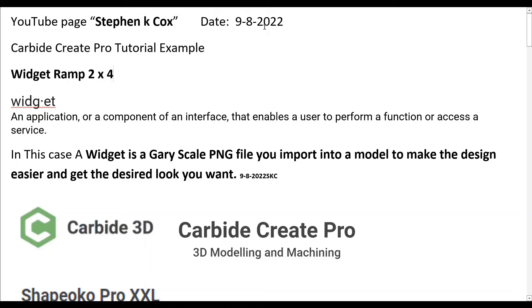My name is Steve Cox and I'm making a YouTube video today on Carbide Create Pro — a tutorial and example. Today we're going to be making a widget ramp that's approximately 2 inches by 4 inches.